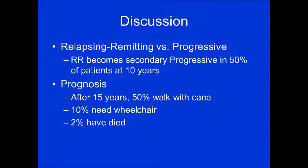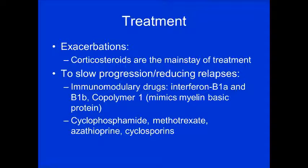Relapsing-remitting MS becomes secondary progressive in about 50% of patients at 10 years. Regarding prognosis: after about 15 years, approximately half the patients diagnosed will be walking with some device such as a cane, some will be wheelchair-bound, and 2% will have died — Annette Funicello died from sequela of multiple sclerosis. For treatment: during exacerbations, corticosteroids are the mainstay. To slow progression and reduce relapses, a number of medications are used.